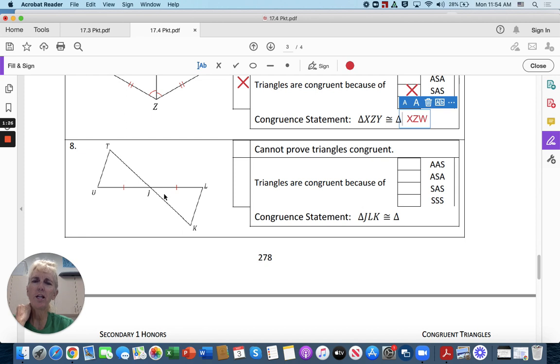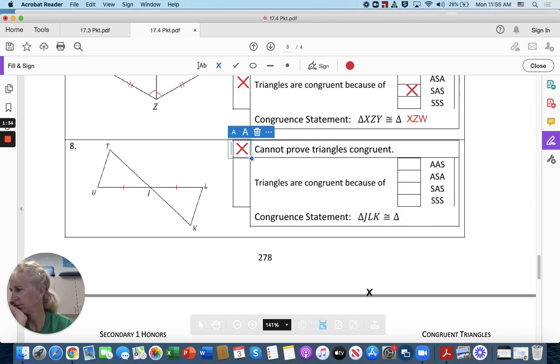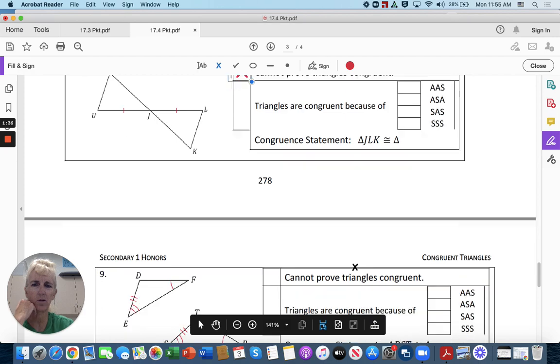However, if you only know two things, you cannot prove that the triangles are congruent. So I put that, and then I don't mark anything over here and I don't mark anything there. That's all you have to do on that part.